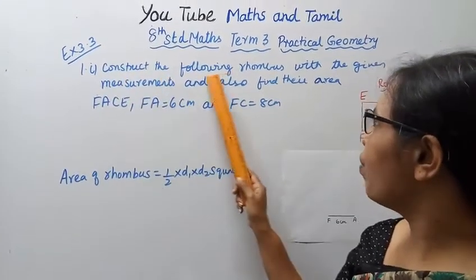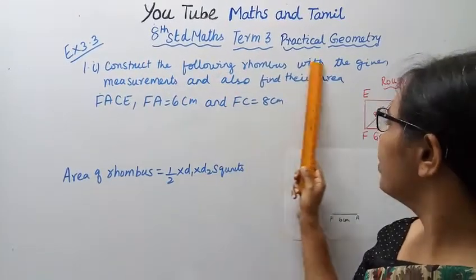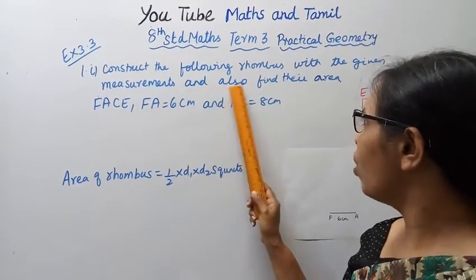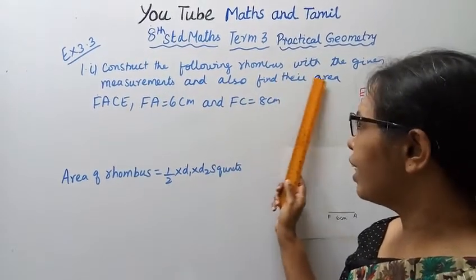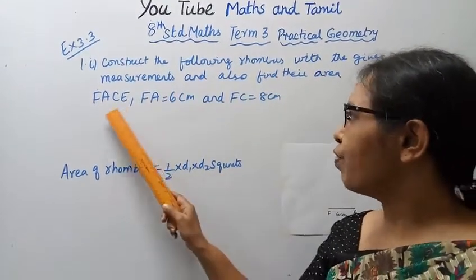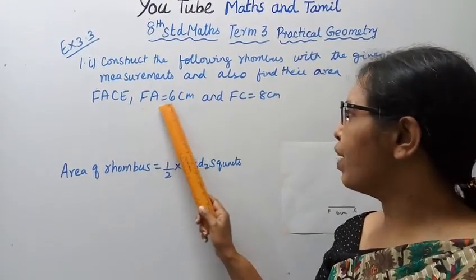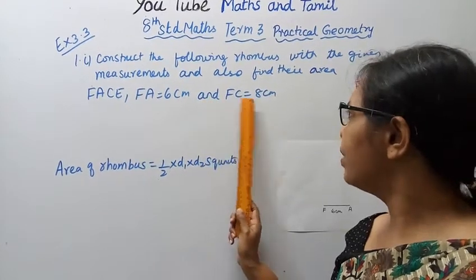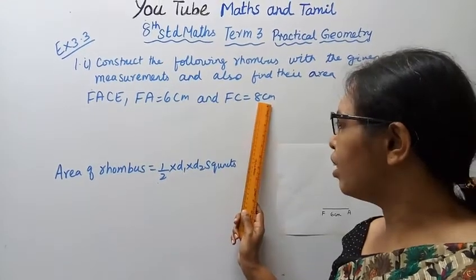Construct the following rhombus with the given measurements and also find their areas. FACE: FA equal to 6 cm and FC equal to 8 cm.